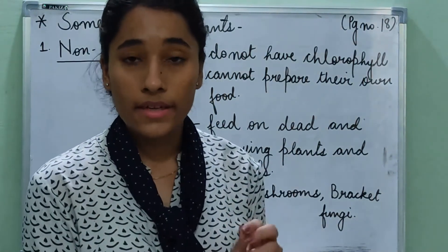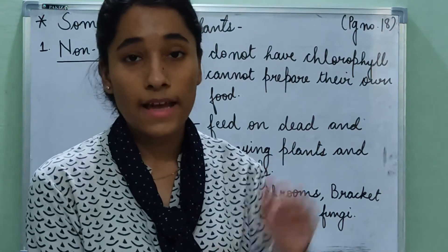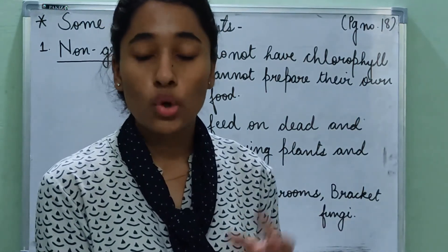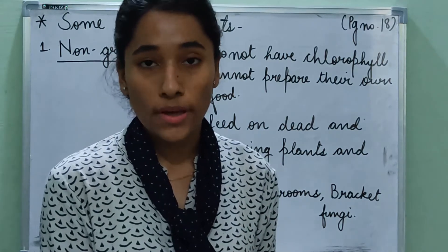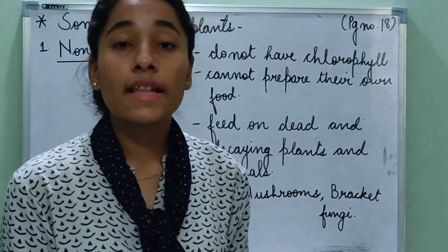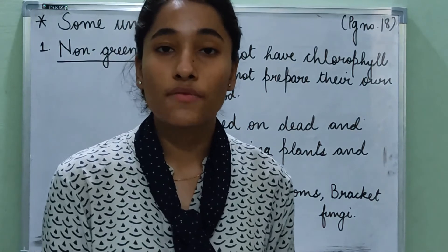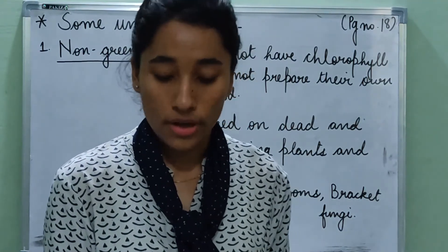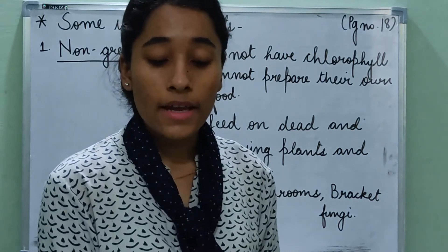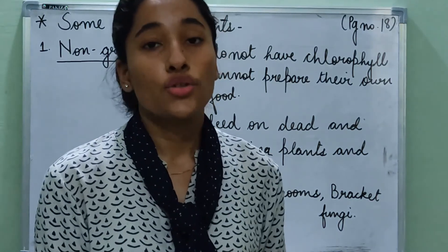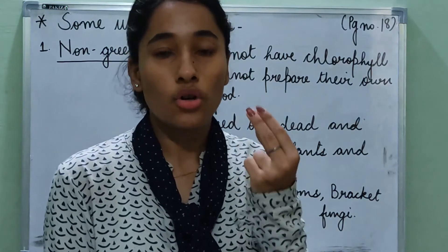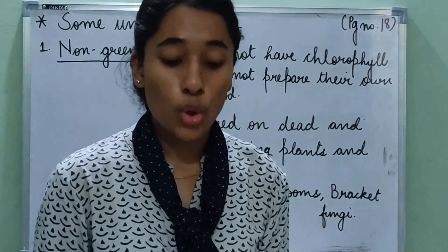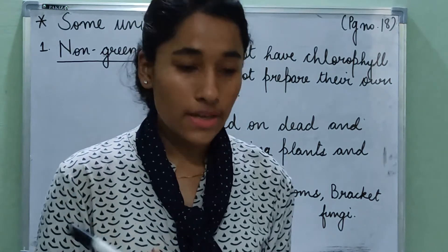Mushrooms have very thin, root-like structures that go deep into the soil. These structures help them to absorb food from the soil, just like roots absorb nutrients. Bracket fungi grow on tree trunks; they look like soft bread or potted cheese, and they absorb food from the trees.